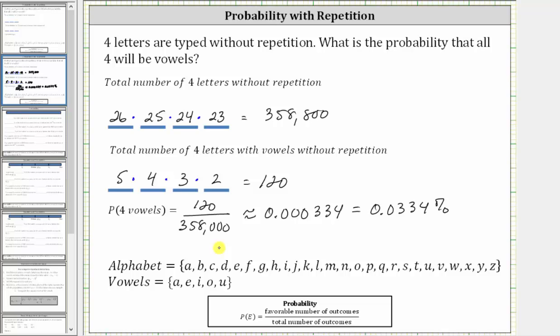We can also determine the probability by thinking of typing the four letters without repetition as four dependent events, and then determining the product of the four probabilities.